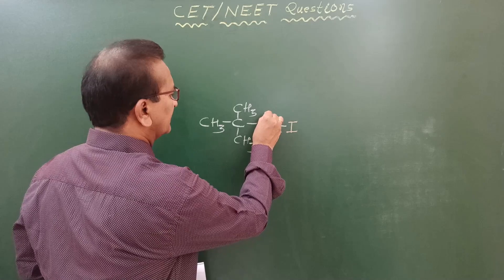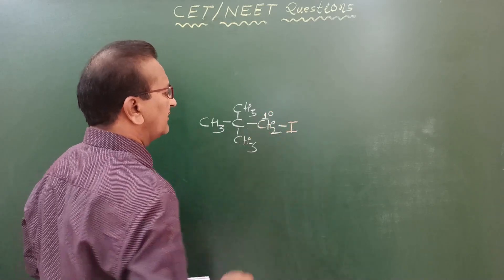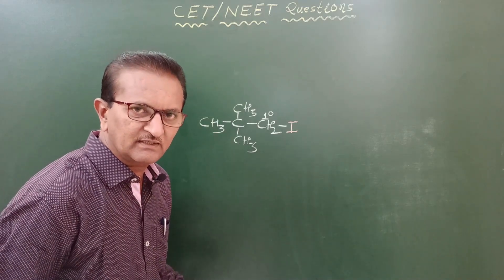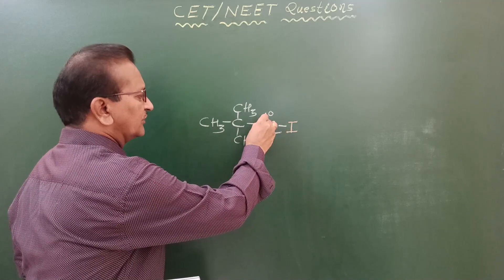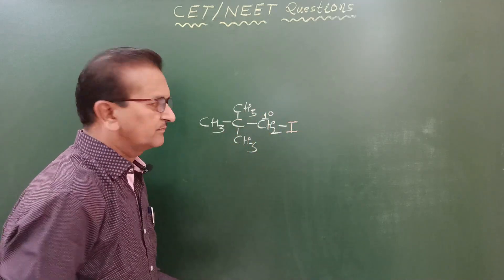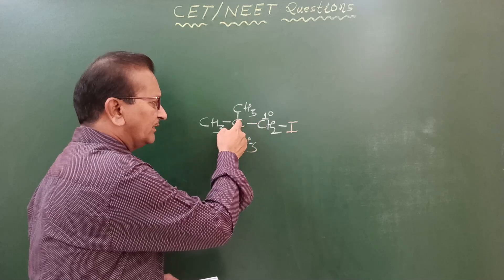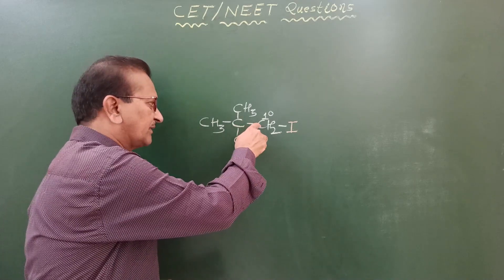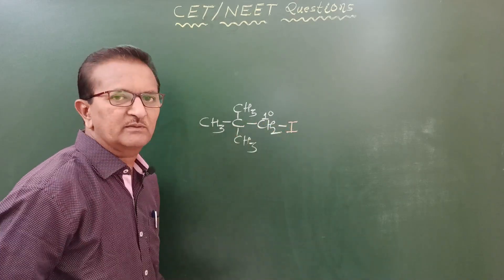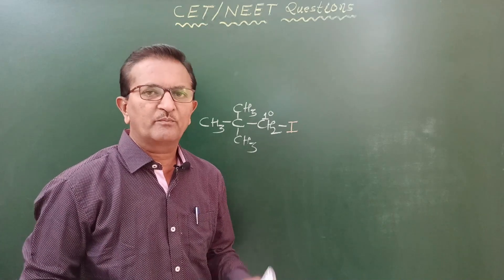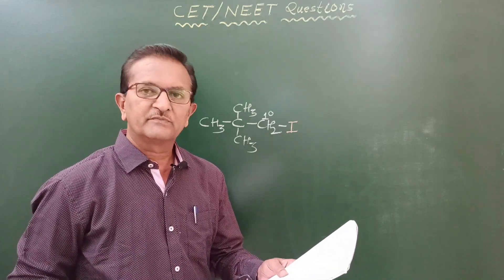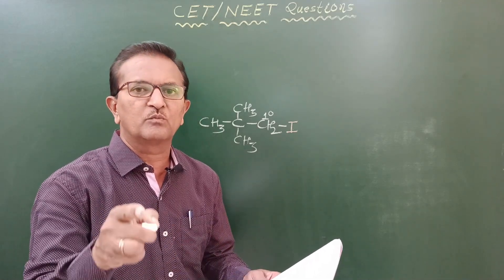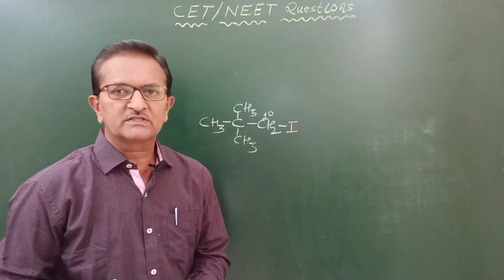In neo amyl iodide, the halogen atom is bonded to a primary carbon atom. This carbon atom is bonded to only one other carbon atom, which is why it is referred to as a primary carbon atom. Therefore, neo amyl iodide is an example of a primary alkyl halide, or according to the question, a primary monohaloalkane.